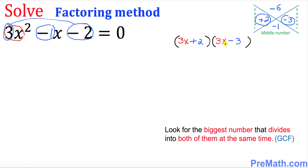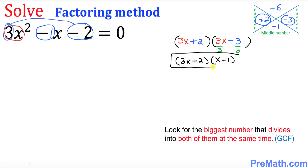Now look at the second parentheses and find the biggest number that divides into both of them at the same time. That number is going to be 3. Divide these two numbers by 3. In the first parentheses there's nothing in common between 3 and 2, so leave them alone. So the parentheses become 3x + 2 in the first one, and x - 1 in the second one when you divide by 3.